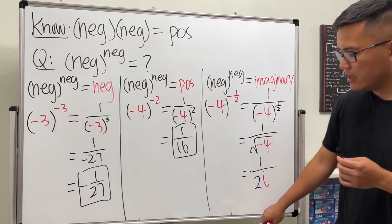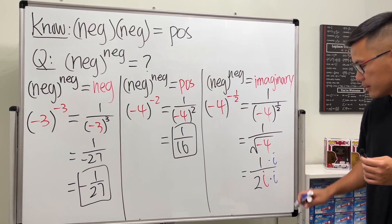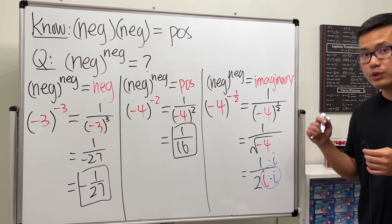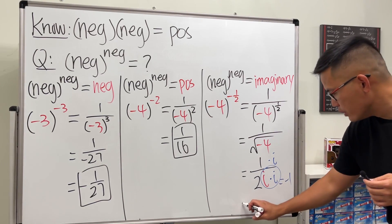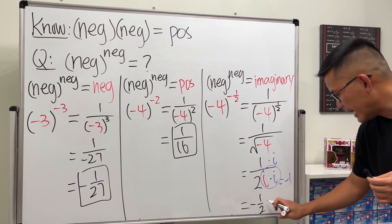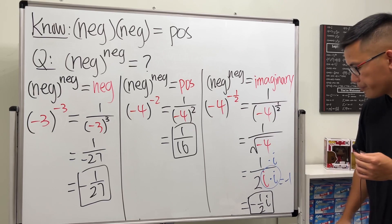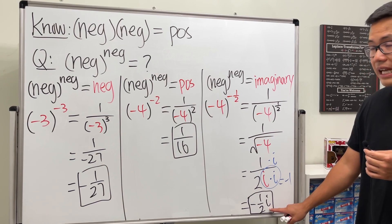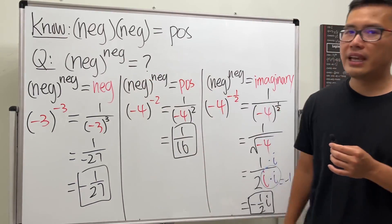The square root of negative four gives us 2i on the bottom, with one on the top. We have one over 2i, but we don't want i on the bottom, so multiply top and bottom by i. Then i times i is i squared, which equals negative one. So we get negative one over two times i, or negative i over 2. This is a purely imaginary number, confirming the third possibility.